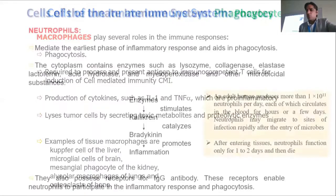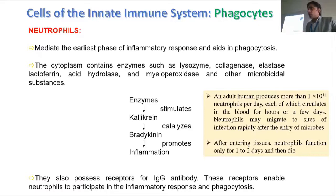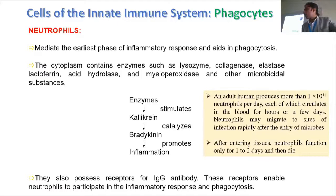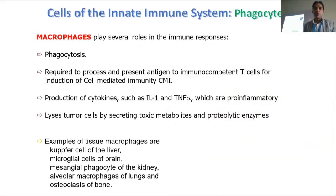We produce about 10 to the 11th neutrophils per day. They accumulate at the site of infection and try to kill bad things. After one to three days they are gone — they produce, they die, they produce, they die. They are not ever-living cells in our system.